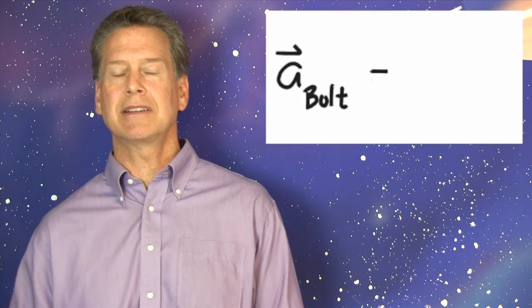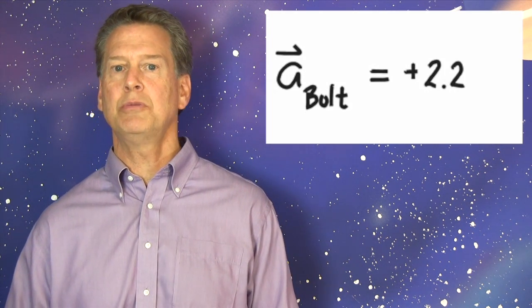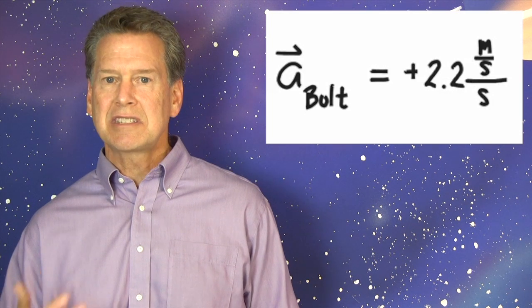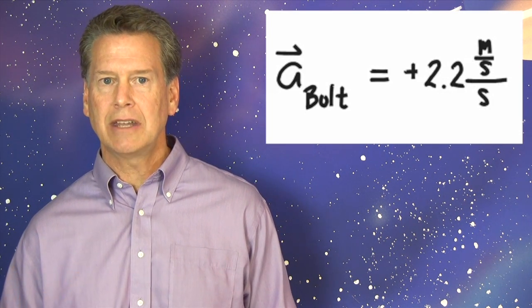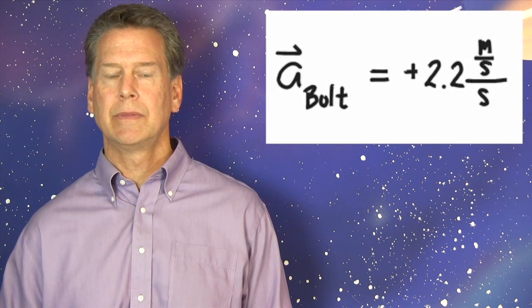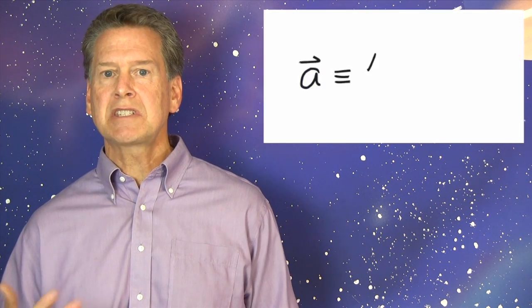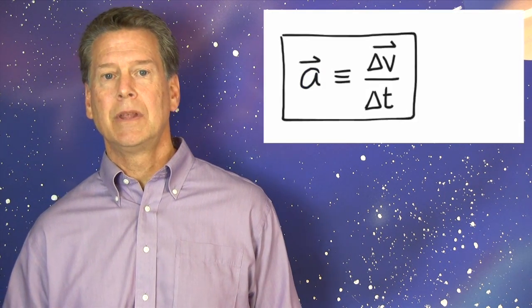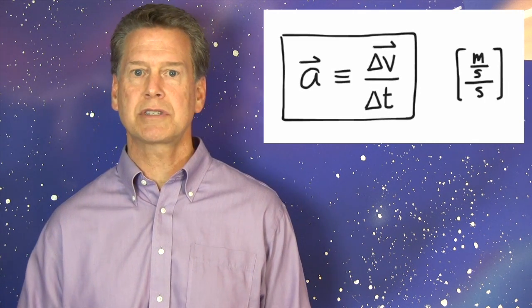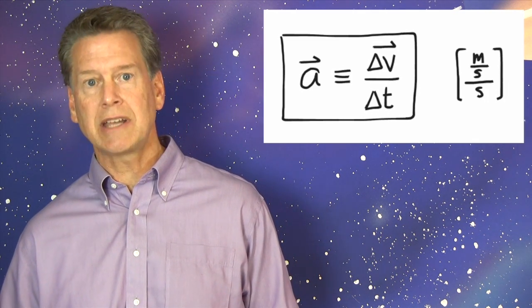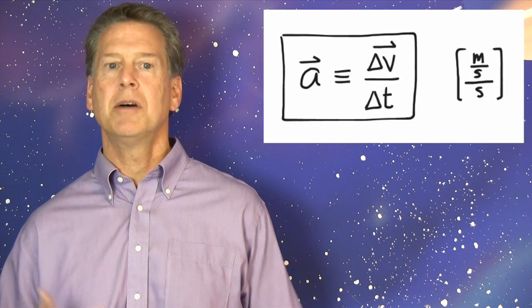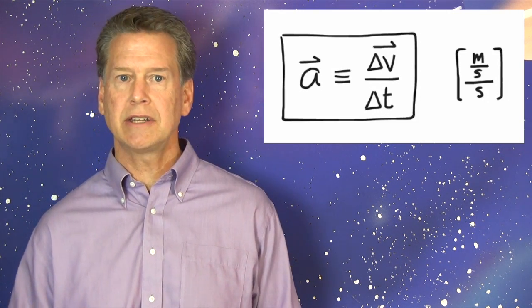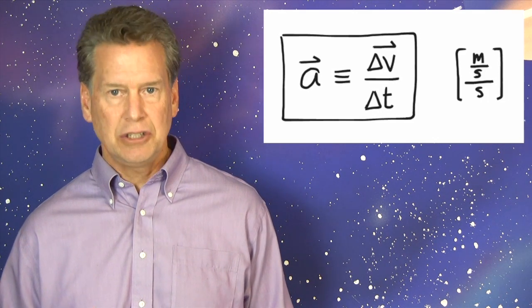Usain Bolt's acceleration during his first 5.5 seconds was plus 2.2 meters per second per second. Consider those units carefully. Meters per second per second will always be our units of acceleration. The definition of acceleration demands it. Other distance and time units can be used, of course. Feet per second per second makes sense. So does miles per hour per second. But we'll stick with meters per second per second. Get used to those units.